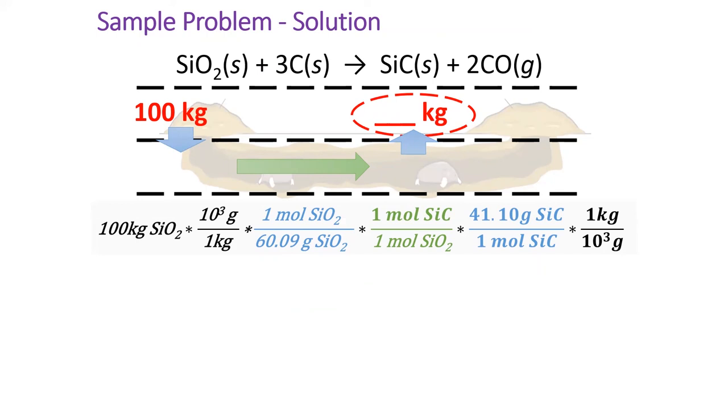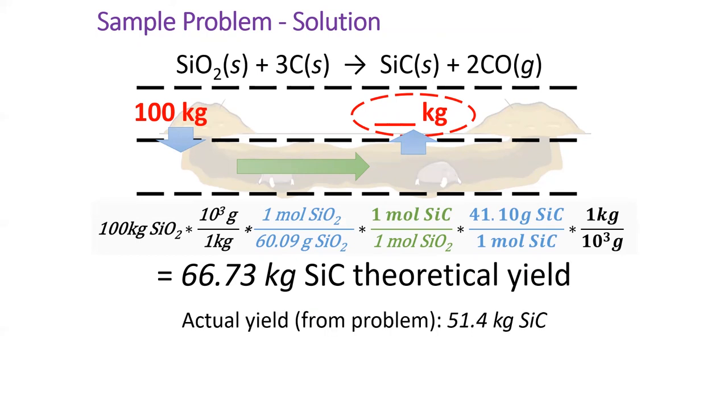If you did your stoic correctly, your theoretical yield is 66.73 kilograms of silicon carbide. The theoretical yield will always be more than the actual yield.